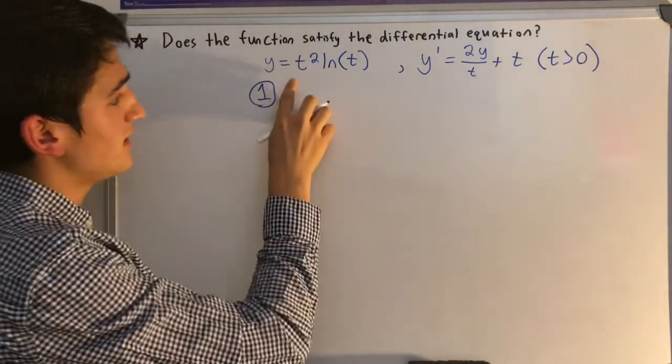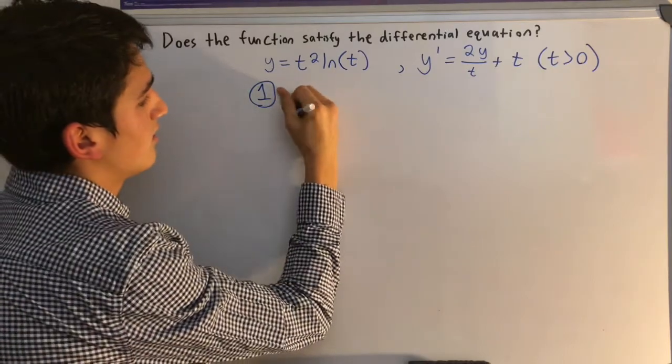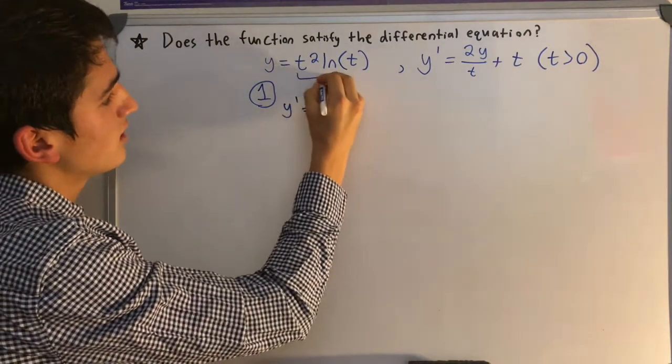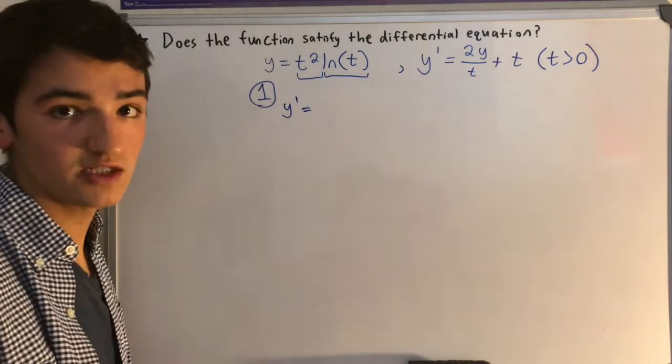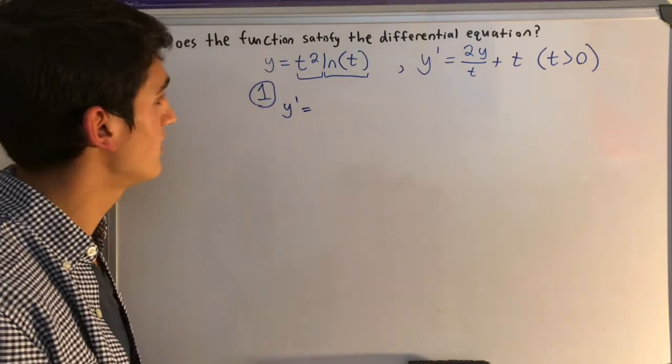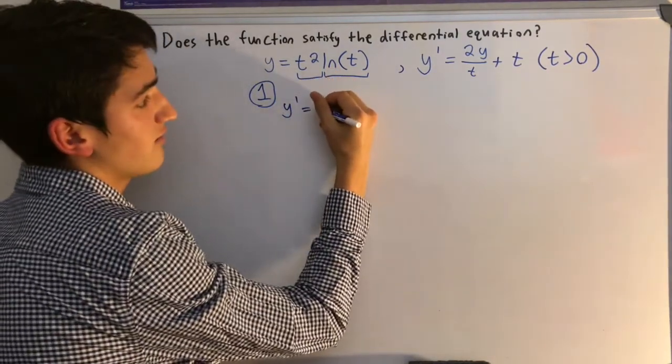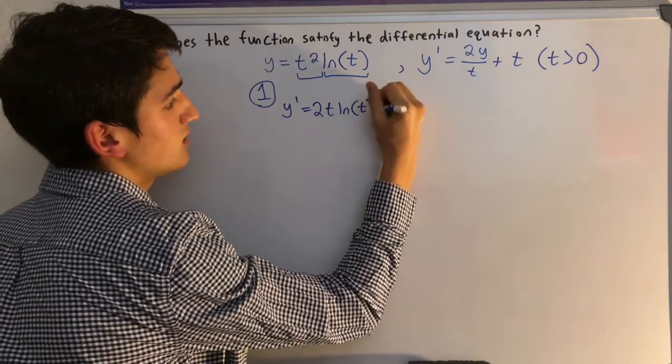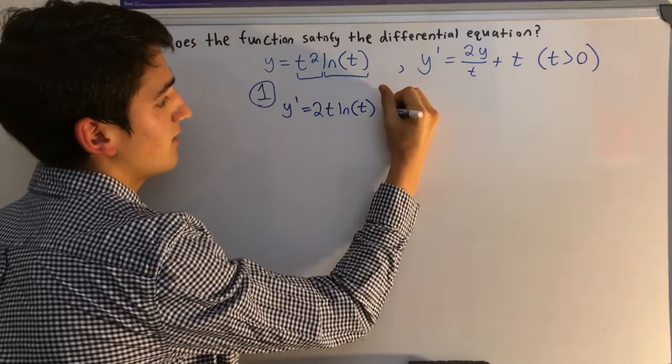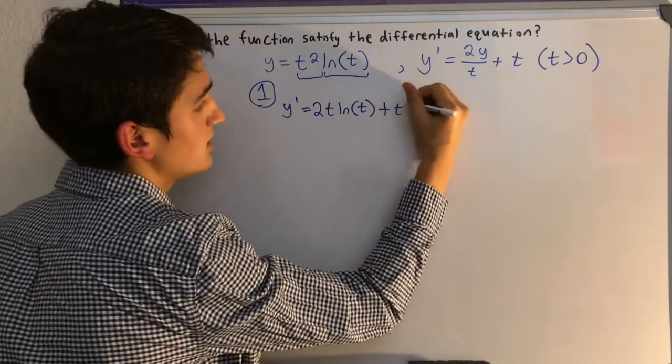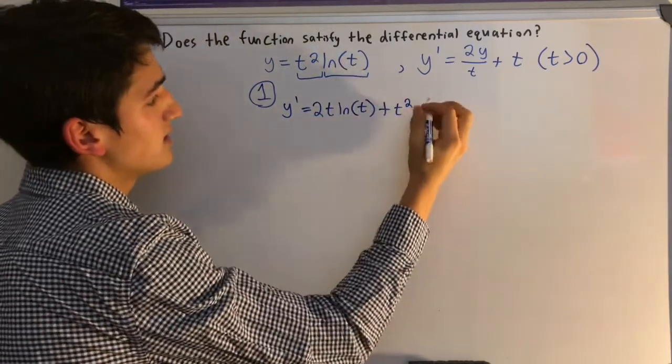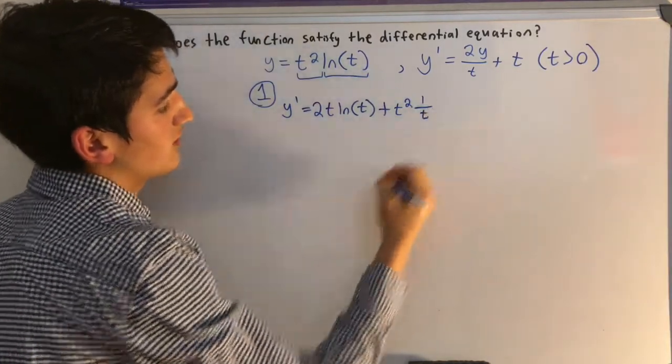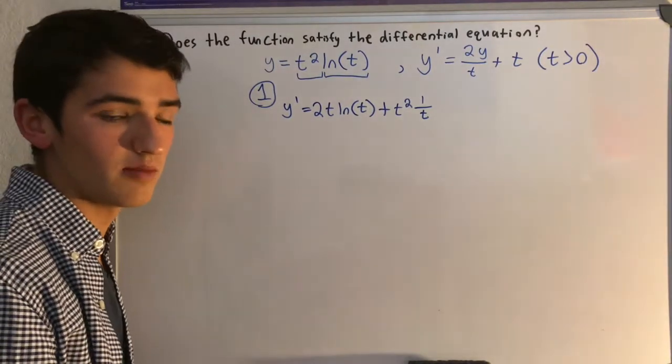So step one, we'll just be differentiating this. So y prime equals, and now you can see this is two functions. One is t squared and one is the natural log of t. So we're going to have to use product rule. So first we're differentiating the first term, so it'll just be 2t times the second term, which is just the natural log of t. Now we're going to add on just the first term, t squared, times the derivative of the second term, which is just 1 over t. And so that's just simple product rule.